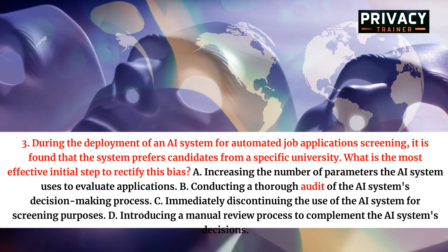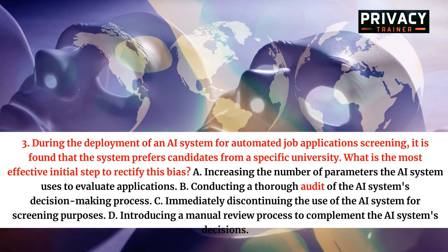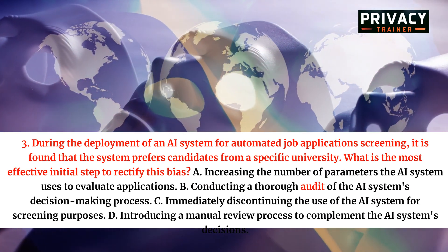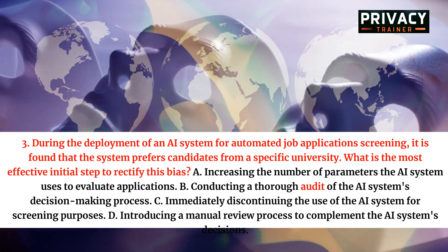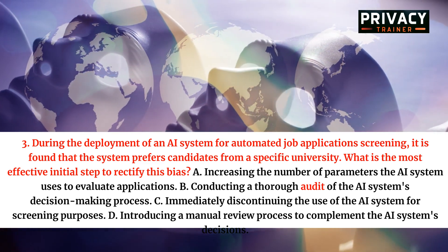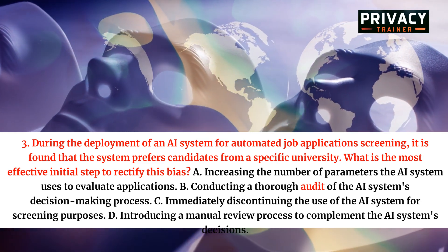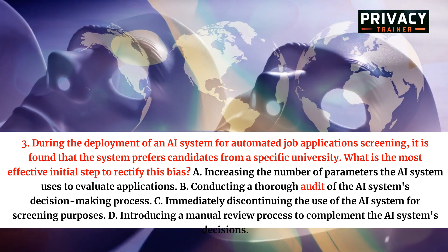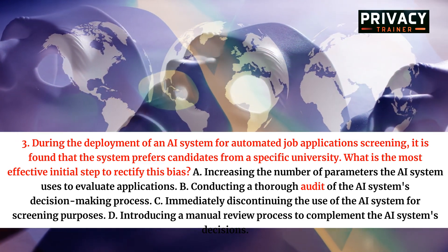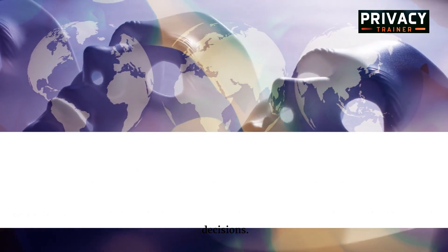Question 3. During the deployment of an AI system for automated job application screening, it is found that the system prefers candidates from a specific university. What is the most effective initial step to rectify this bias? A. Increasing the number of parameters the AI system uses to evaluate applications. B. Conducting a thorough audit of the AI system's decision-making process. C. Immediately discontinuing the use of the AI system for screening purposes. D. Introducing a manual review process to complement the AI system's decisions.